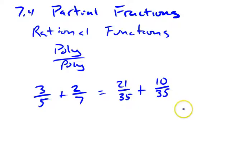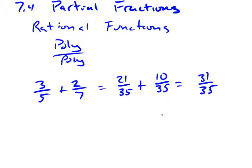So now that I have common denominators I can just add, essentially there's a distributive property where you factor out the 1 over 35. So I've got 31 over 35 to add those up. Now the process that we're going to be doing is essentially this backwards. We're going to start with this and see if we can work our way back to that.